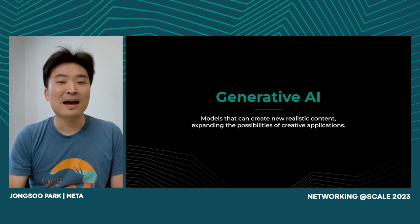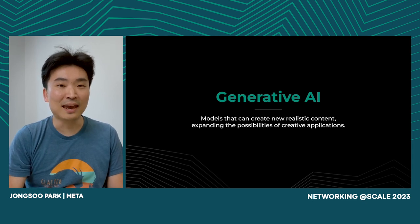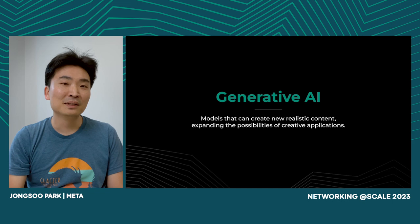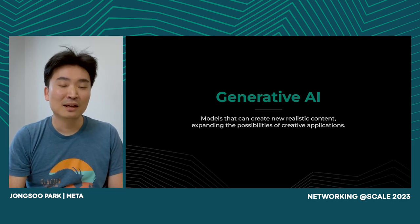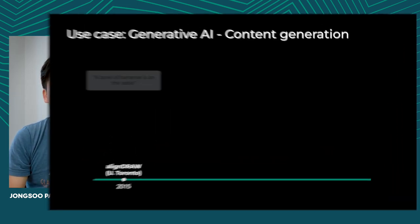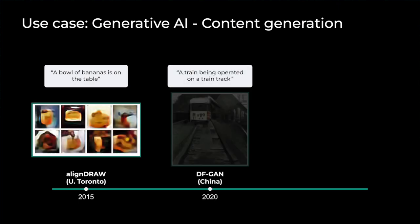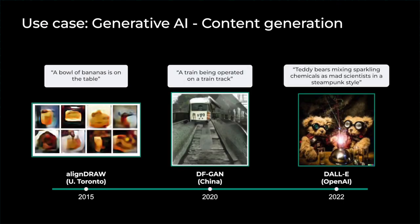Generative AI opens up huge new opportunities and applications — for example, image and video generation, and text generation. Generative AI goes back to 2015 when Jeff Hinton's lab at the University of Toronto showed generating an image of a bowl of bananas on a table. You can notice how low resolution those were. In the next few years, we've seen a lot of breakthroughs — DALL-E and Stable Diffusion for image generation, and GPT for text generation.